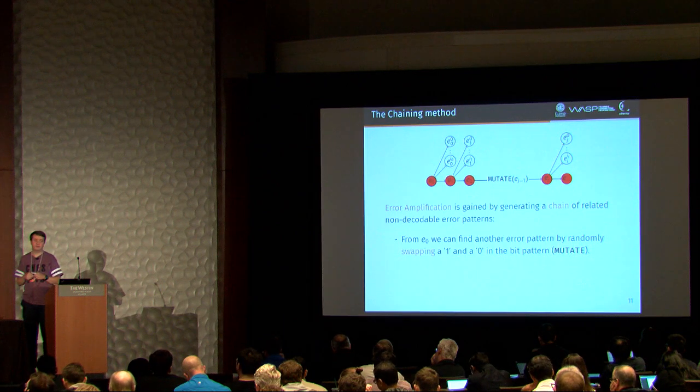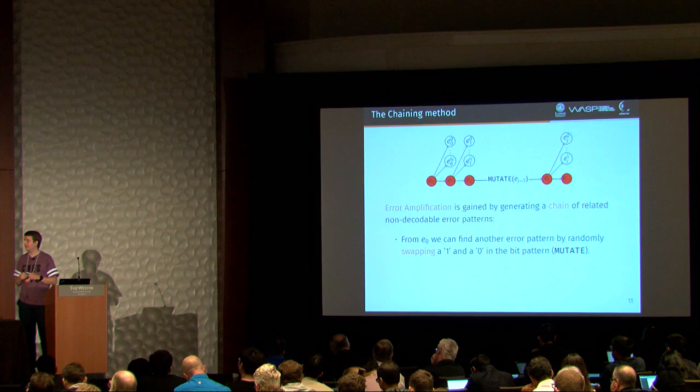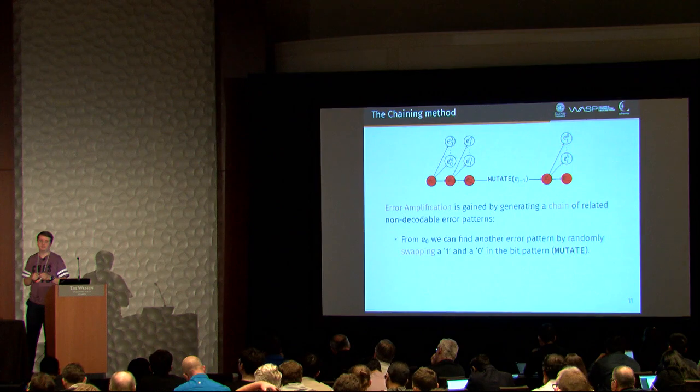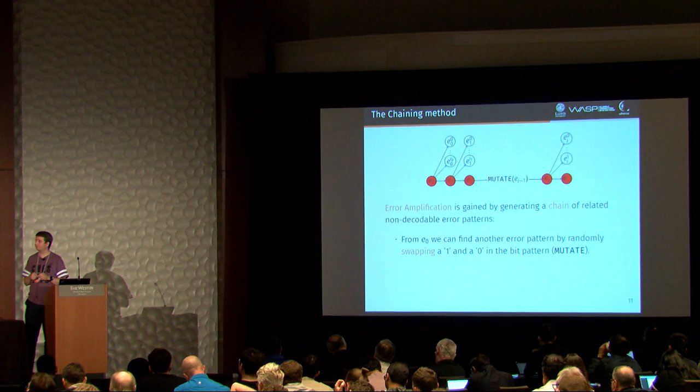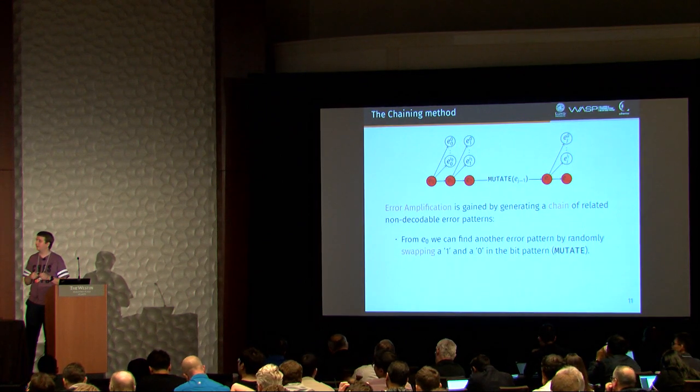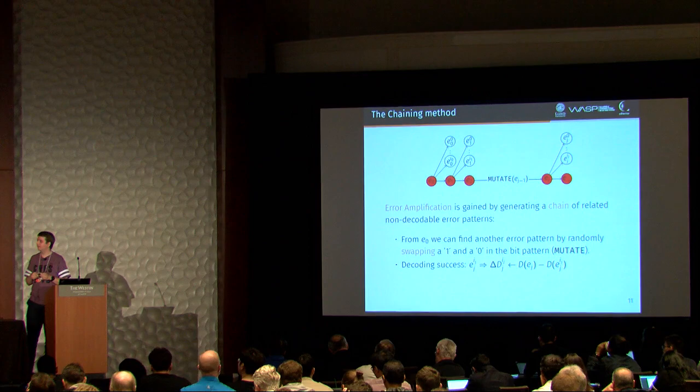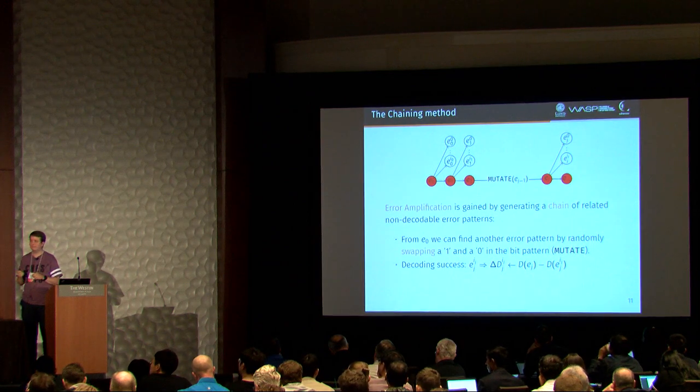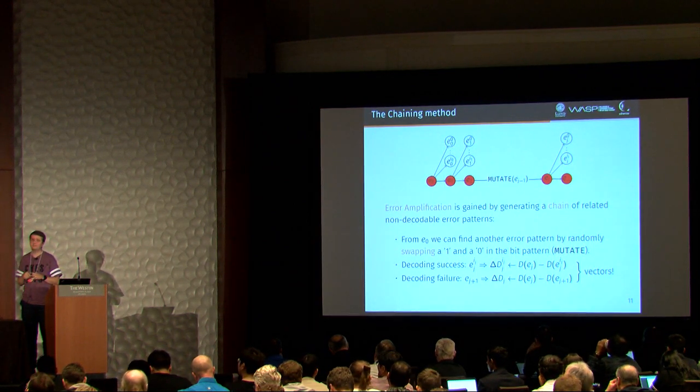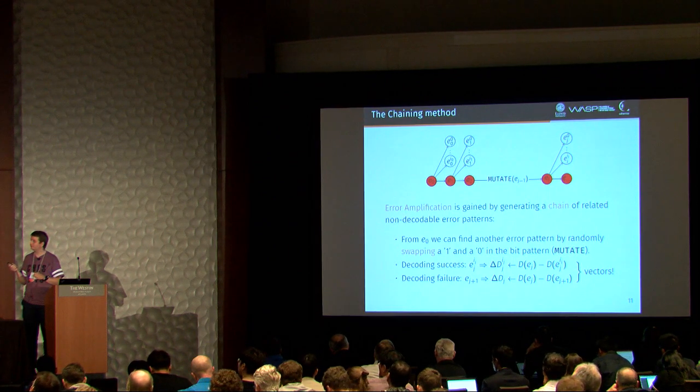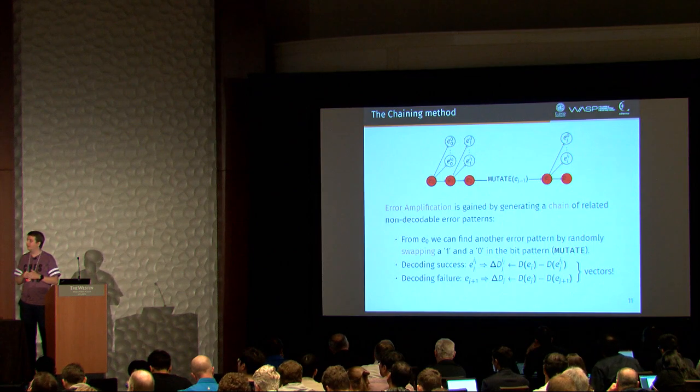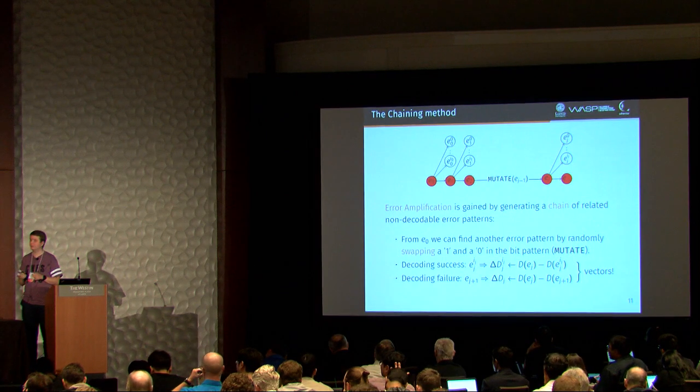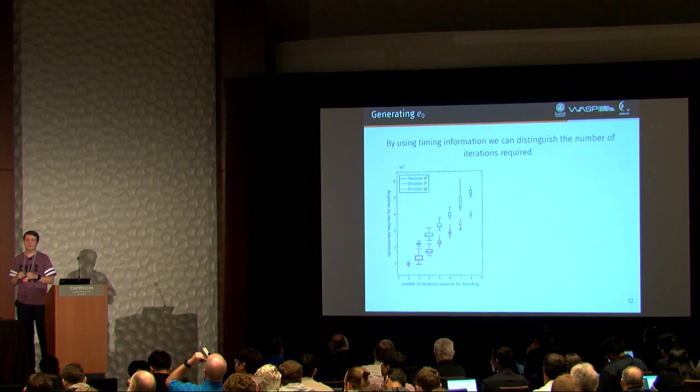Of course, this doesn't give us anything unless we save some information from this. So what we do is to take the differences of the distance spectrum for each mutation. So, for example, if we have successful decoding, then we save these differences of the distance spectrum into a new vector. And we do the same thing for decoding failures. And also keep in mind that these are all vectors. So we need an initial error pattern, and we can do that by random, like in the original attack. Or we can actually use the chain method again if we have a non-constant time decoder.